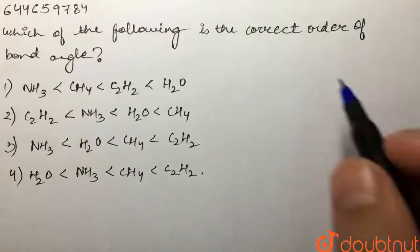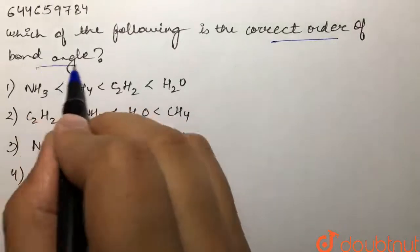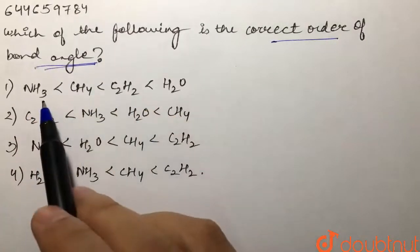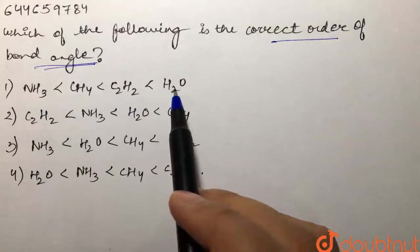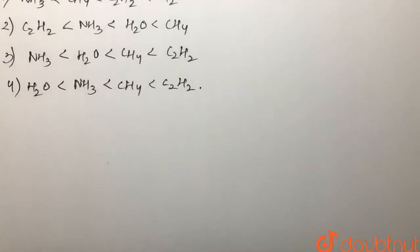Our question is: which of the following is the correct order of bond angle? We are given ammonia, methane, C2H2, and water, and we are supposed to tell which is the correct bond angle order for them. So we'll draw the structures of them one by one.